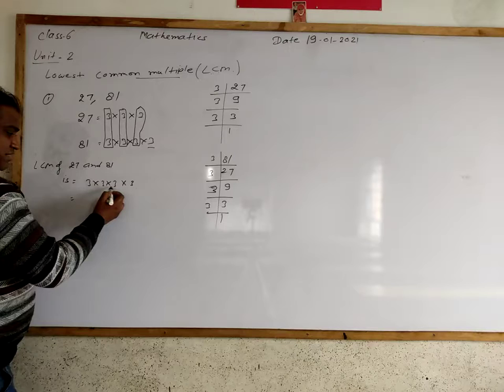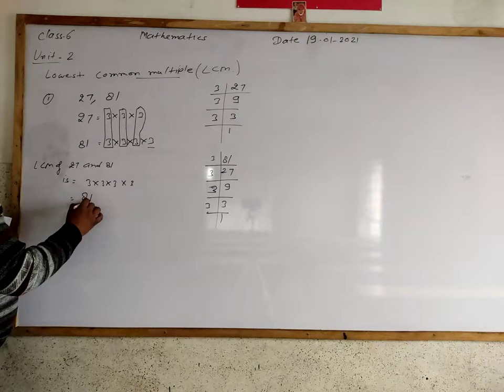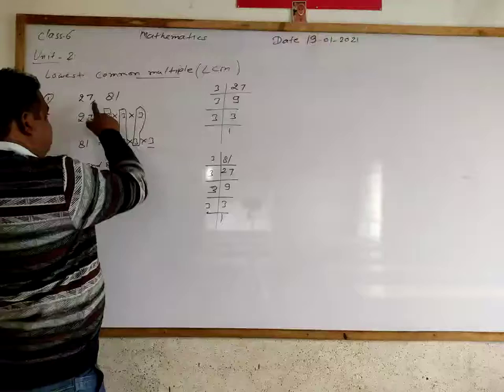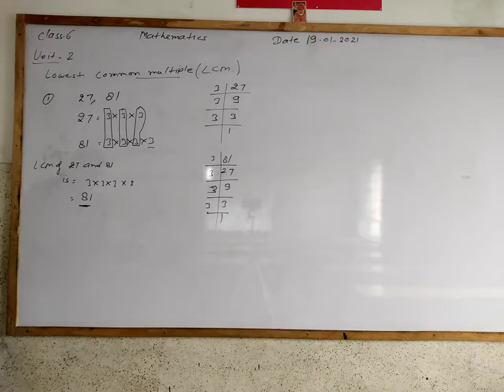So LCM of 27 and 81 is equal to 3 multiply 3 multiply 3 multiply 3. LCM of 27 and 81 is that number which is completely divisible by 27 and 81.